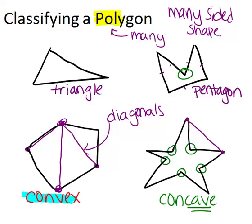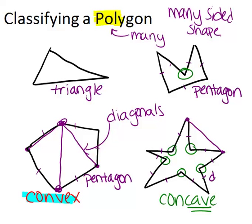Moving to the bottom left, this one also has five sides, but this time it's a convex pentagon. And the last one, the star, has ten sides. That makes it a concave decagon.